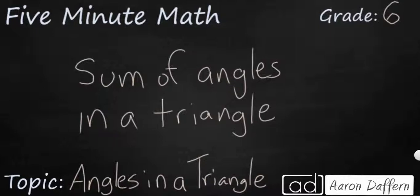So remember that the sum of the angles in any triangle, whether it be right, isosceles, or equilateral, is always going to be 180 degrees.